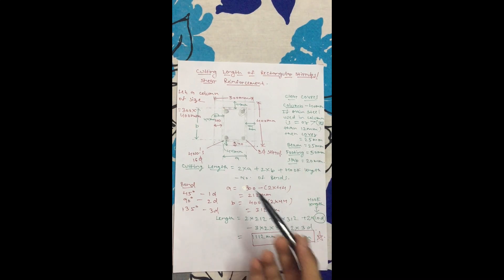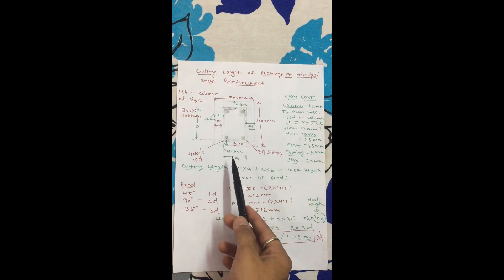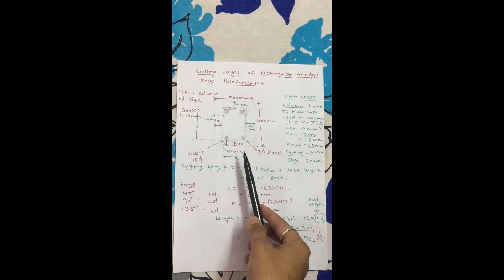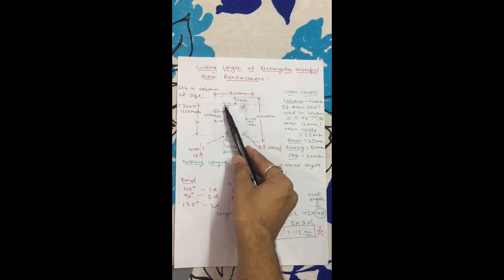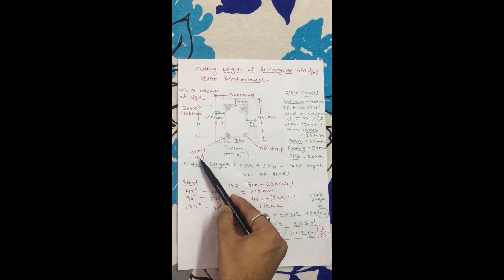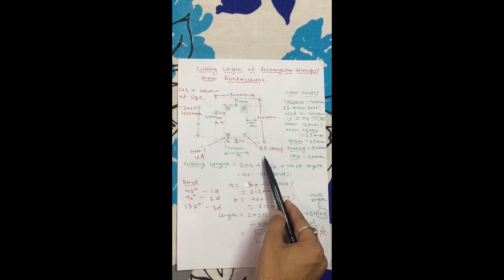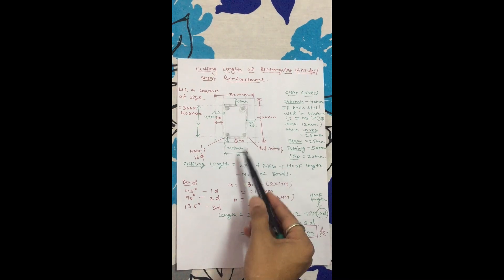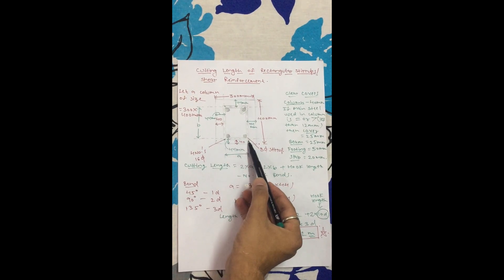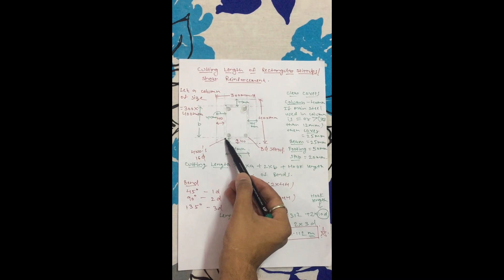So let's start. Suppose a column has a size of 300 by 400 - 300 is the width and 400 is the height. In the column we use 4 main bars, numbered 1, 2, 3, 4. The main steel is 16mm and the ring diameter is 8mm. We have to take this ring from center to center.